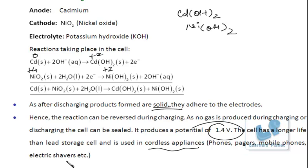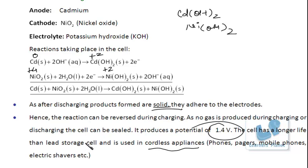The nickel cadmium cell has a longer life than the lead storage cell and is used in cordless appliances such as phones, pagers, mobile phones, and electric shavers. This is also a type of secondary cell or storage cell, because current can be stored in it.